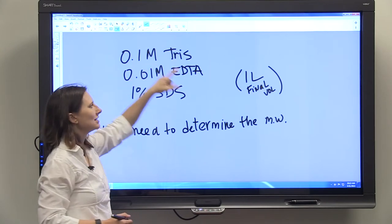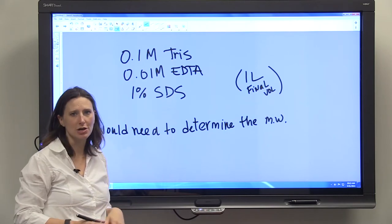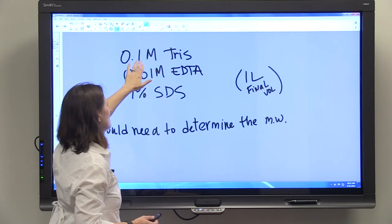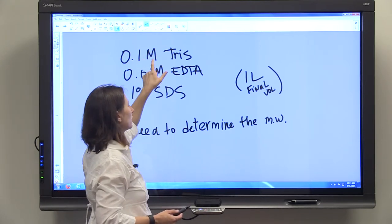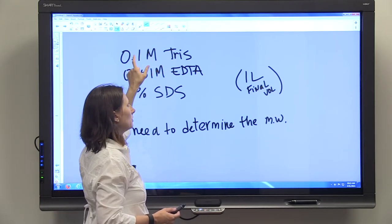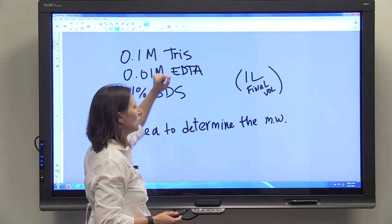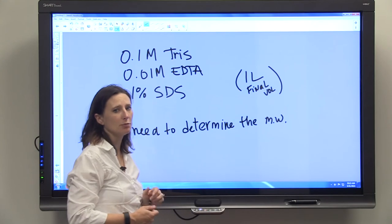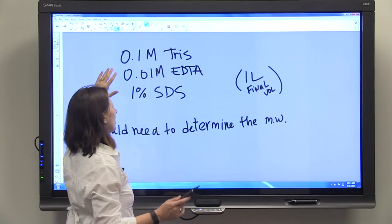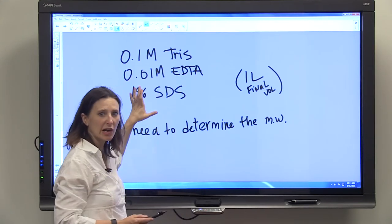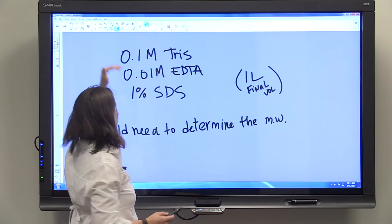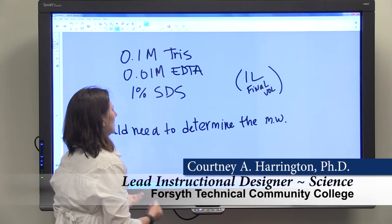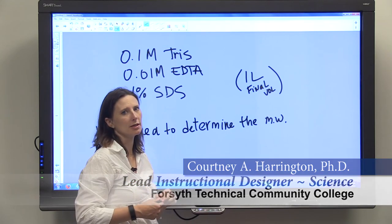The thing to remember with something like this is that this 0.1 molar Tris concentration is independent of the concentrations of the other solutes. You have to make sure that you're adding 0.1 moles per liter of Tris. So if you're making a liter, you need to add 0.1 moles of Tris. You can kind of ignore what else is going on and deal with each piece separately, and then at the end you would bring it up to a final volume of one liter.